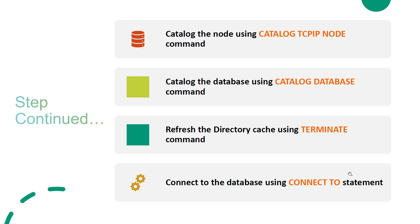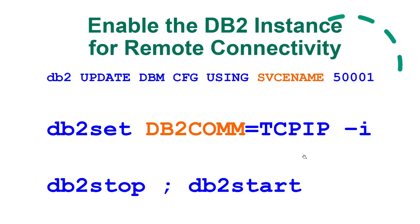Once the client instance is created, you need to do two things: catalog the TCPIP node and catalog the database. Catalog the TCPIP node once per instance — if you have multiple instances, run this command multiple times. Catalog the database once per database — if you have three databases, run this command three times. Once done, use the 'db2 terminate' command to refresh the directory cache, and you are ready to connect using the 'db2 connect to' statement.